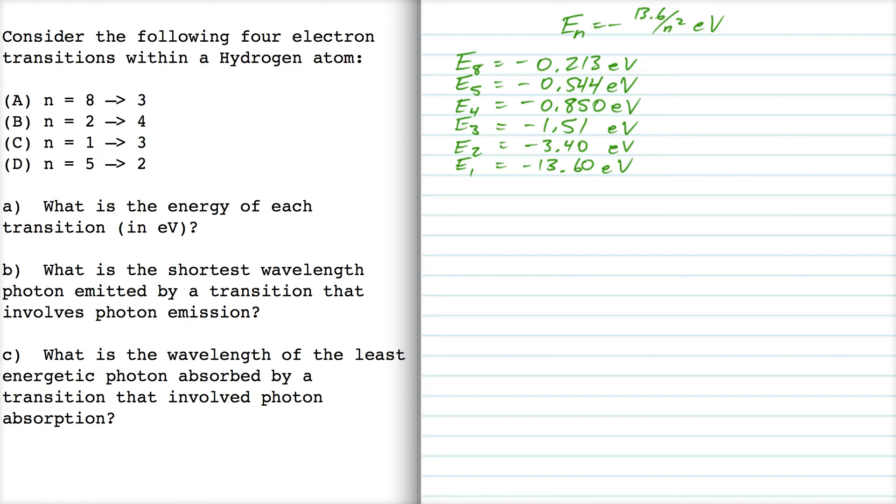So, part A, it's asked for the energy of each transition. So, we just want to know the energy. The problem doesn't say whether these are emission... oh, I see. So when we go from 8 to 3, part A, let's consider the transition that goes from level 8 to level 3.